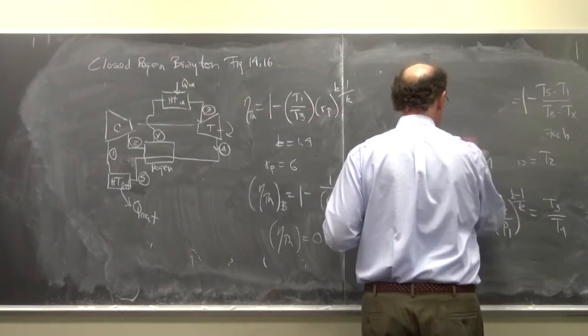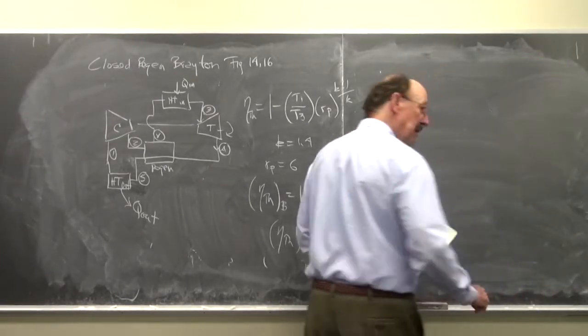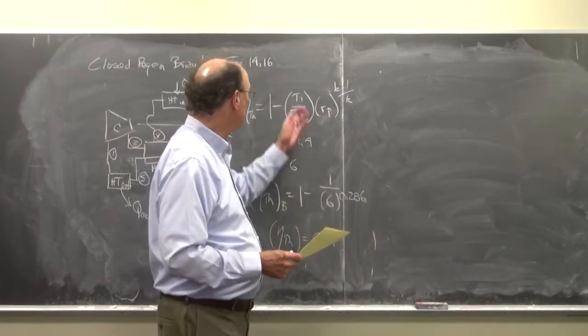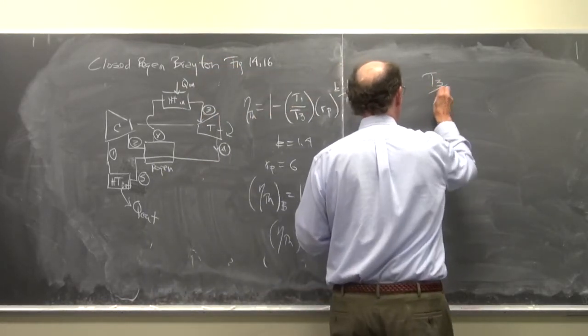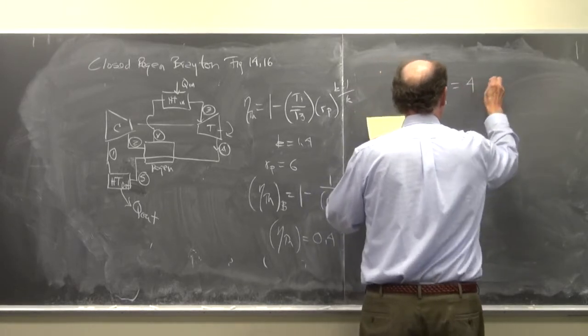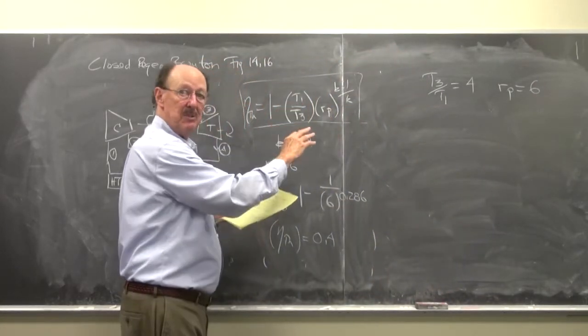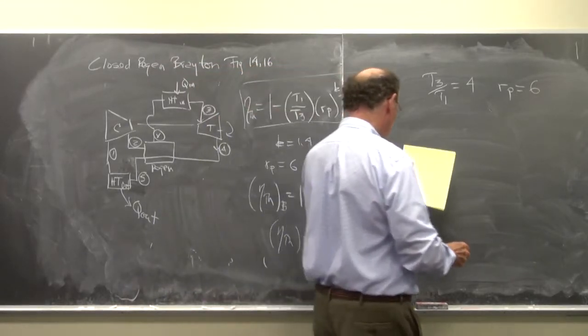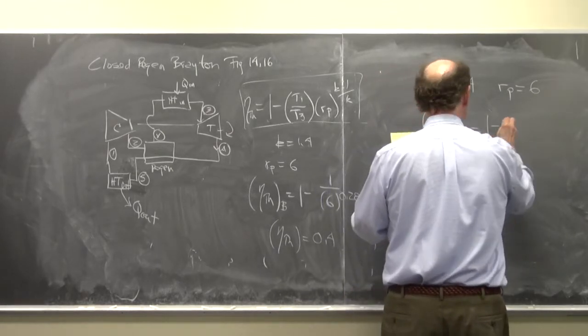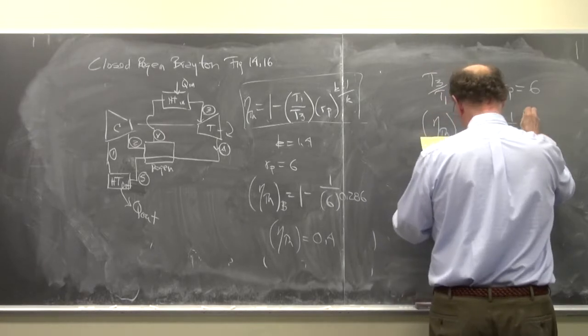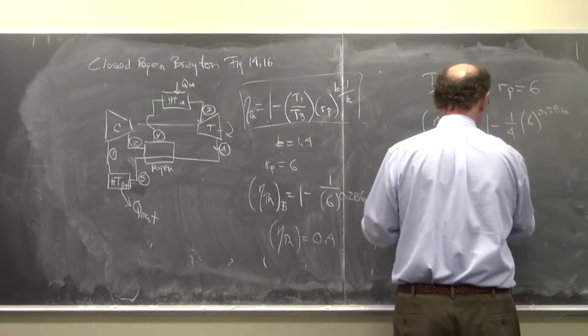If I take T3 over T1 of 4, so now I'm going to hold the R sub P constant, and now what I'm going to do is specify T3 over T1. So let's say that T3 over T1 is equal to 4, R sub P is equal to 6. Then I'm going to substitute in this equation and see what the thermal efficiency would be. So the thermal efficiency for the regenerative Brayton would be 1 minus 1 over 4 times 6 to the 0.286. So we get here that the efficiency is 0.58.